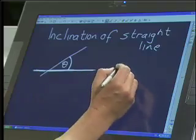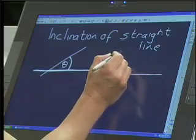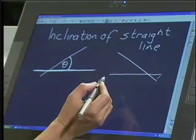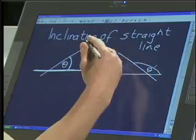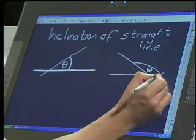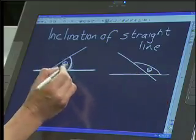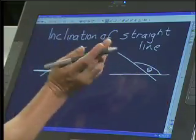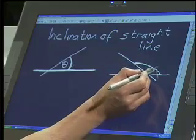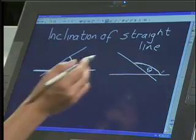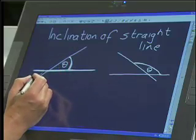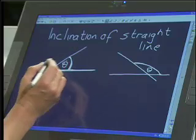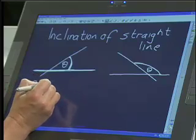However, if the line is directed to the top left, then we must take the obtuse angle on the right of the line. So we always seem to take the angle that is to the right of the line towards the horizontal. In this case, theta here would be the inclination, and we see that theta is acute.